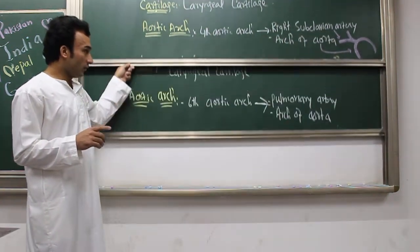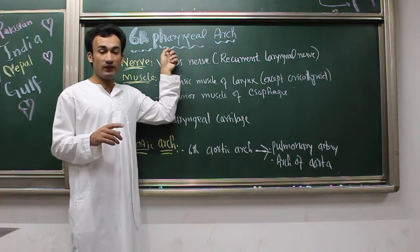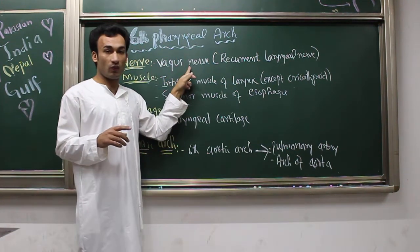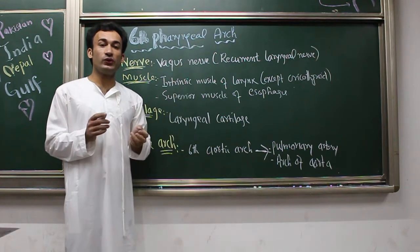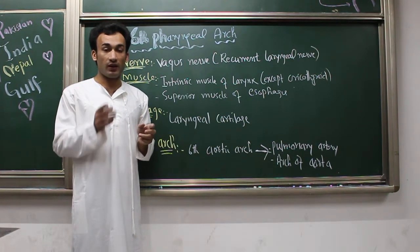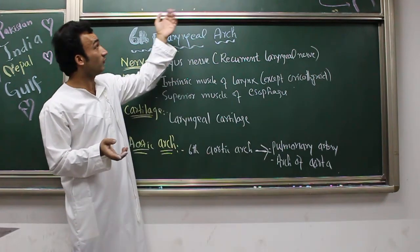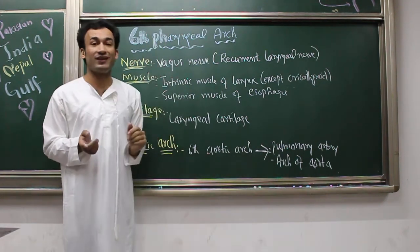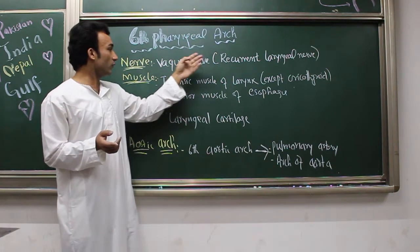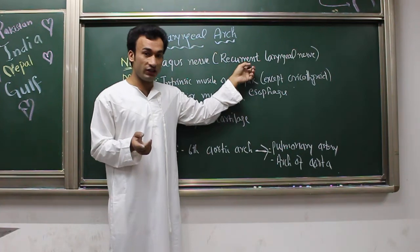Now let's talk about the sixth pharyngeal arch. The nerve for the sixth pharyngeal arch is also the vagus nerve. As mentioned, the fourth and sixth pharyngeal arches share the same nerve — the vagus nerve — but with different branches. For the fourth pharyngeal arch the branch was the superior laryngeal nerve, but for the sixth pharyngeal arch the branch is the recurrent laryngeal nerve.